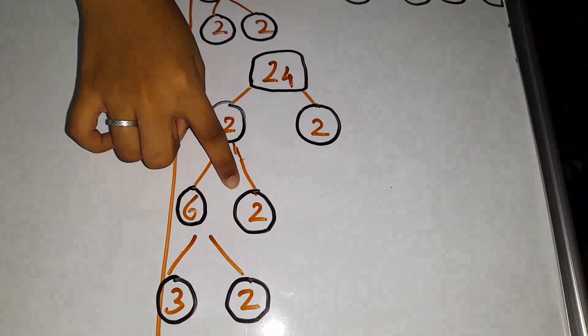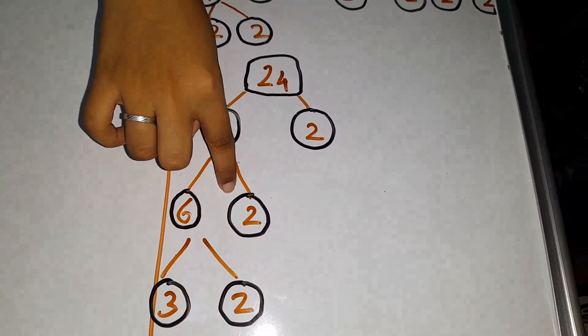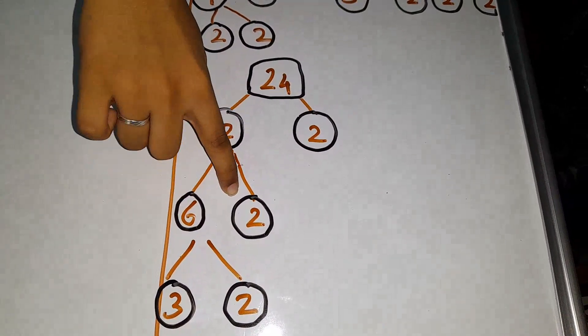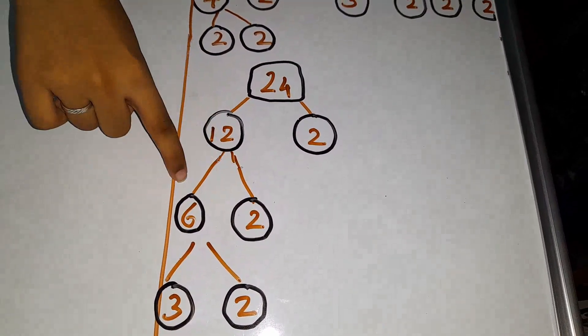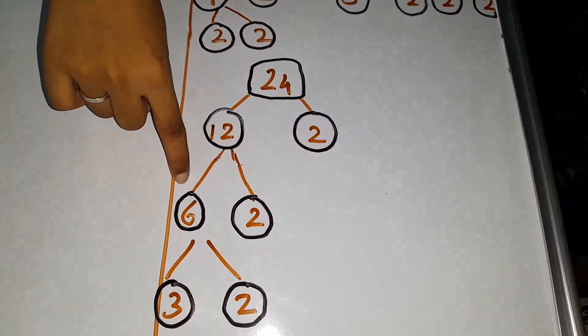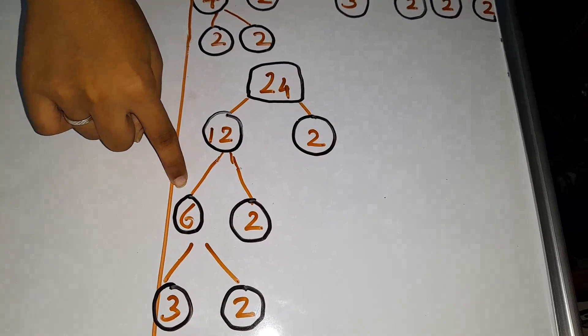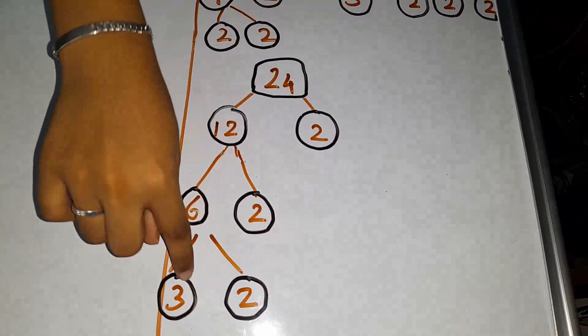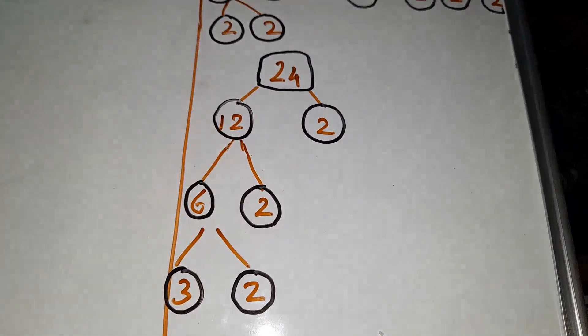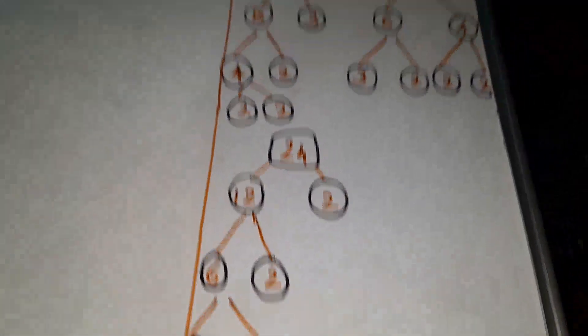6 times 2 equals 12. 2 is a prime number but 6 is not, so we have to factorize 6. 3 times 2 equals 6. Both 3 and 2 are prime numbers, so we have to stop there.